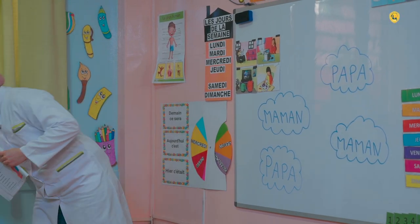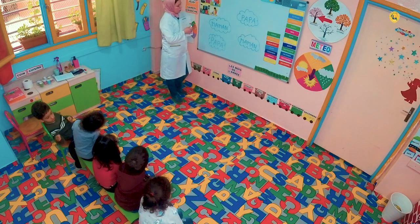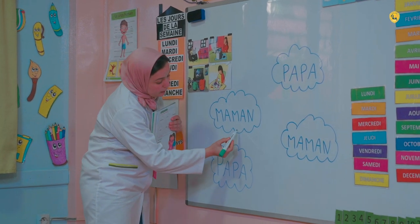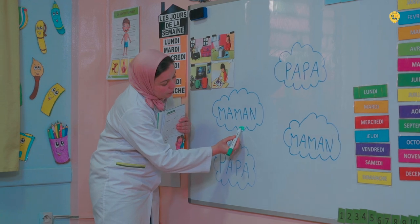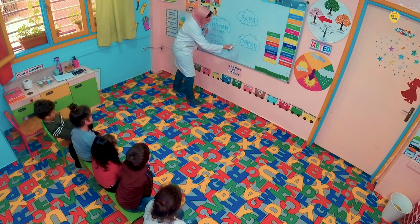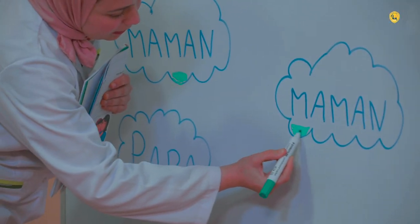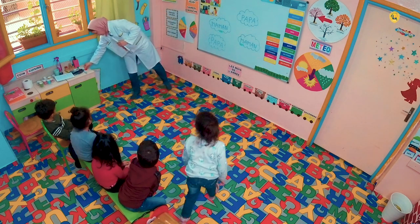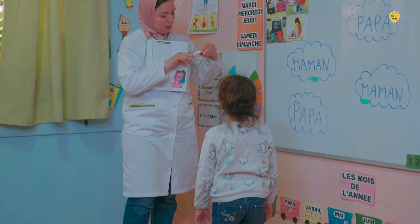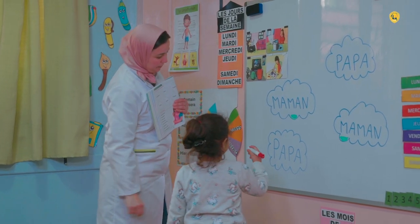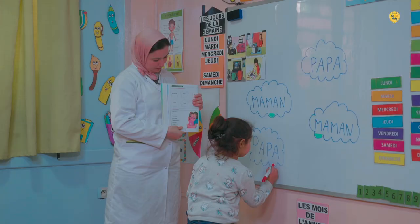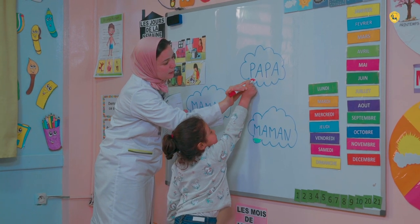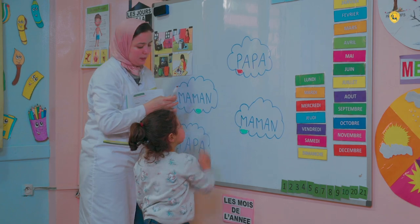Qu'est-ce qu'on va faire maintenant ? Je colorie. Très bien, je colorie, je choisis une couleur — j'ai choisi la couleur verte. Je colorie l'étiquette de maman, et la deuxième étiquette de maman. Voilà, maman, maman. Ritage, tu colories les deux étiquettes semblables de papa. Voilà, et l'autre ? Voilà, comme ça. Très bien. Merci, Ritage.